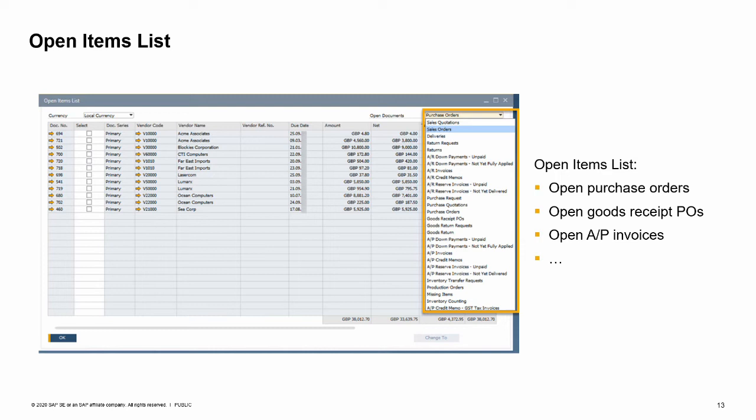Often the first step in building one document from another is locating the base document you want to use. This report can be very useful for finding documents for processing. For example, goods may be delivered to a warehouse and a goods receipt PO needs to be entered. How do you find the relevant purchase order? The open items list can be used for locating documents quickly. You can then choose the relevant purchase order and create a goods receipt PO with a single click on the copy to button. When one document is built from another in this fashion, all the relevant information is copied from the base document to the new document, reducing both data entry time and errors.